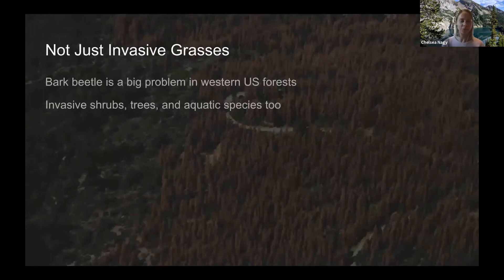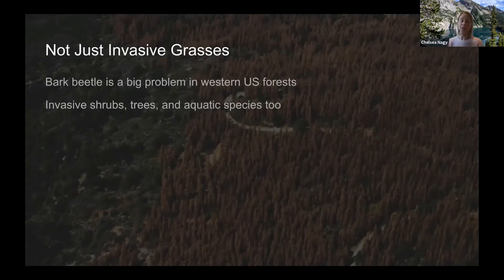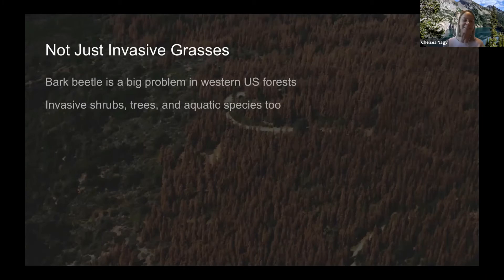My talk today focuses on invasive grasses and fire, but I don't want to leave out other important invasives. Bark beetle is a big problem in the western US — especially when a bark beetle infestation is compounded by drought and fire, very large areas of forest can die off. Similarly, invasive shrubs, trees, and aquatic species are found all over the US and worldwide, but those aren't the focus of today's talk.